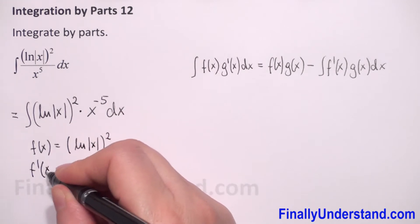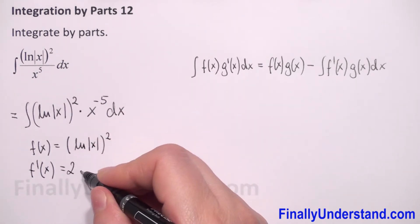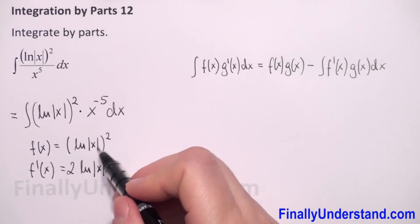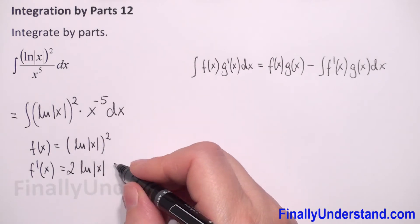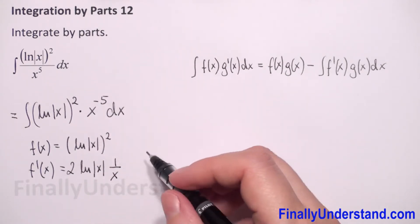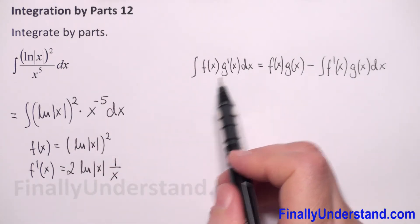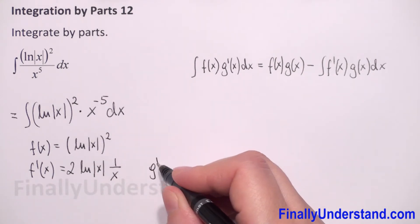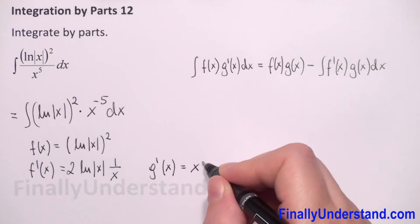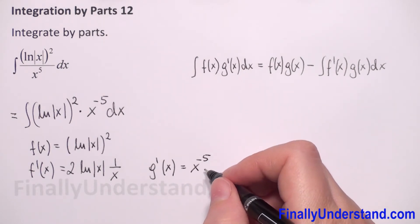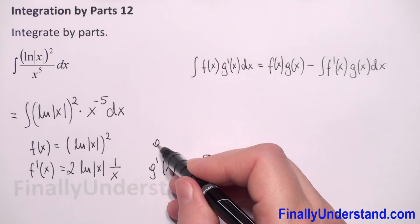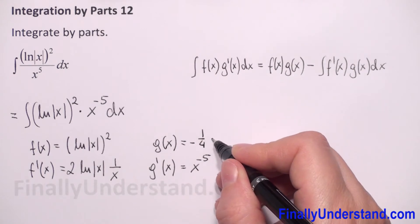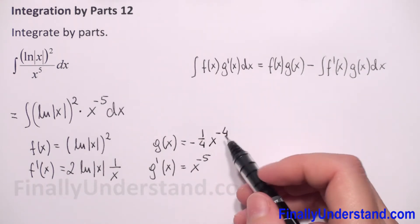So f'(x) will be 2 times the natural logarithm of |x|, times the derivative of the function inside. The derivative of ln|x| is 1/x. Whatever is left is our g'(x). Since f(x) is the first expression, we have g'(x) equal to x to the power negative 5. Now we need to find g(x), which is equal to negative 1 over 4 times x to the negative 4.